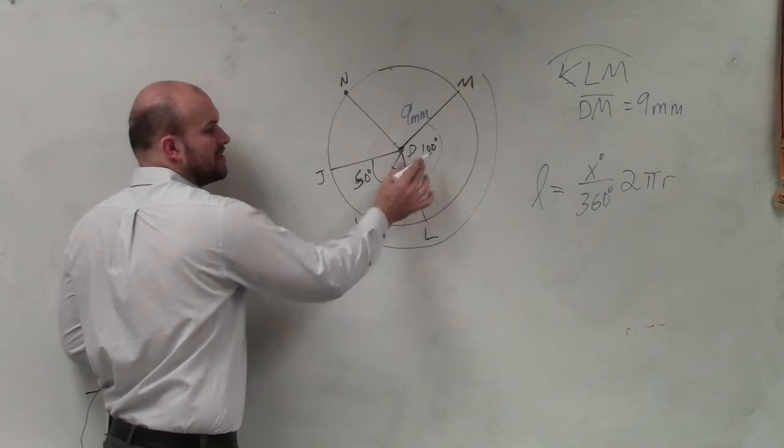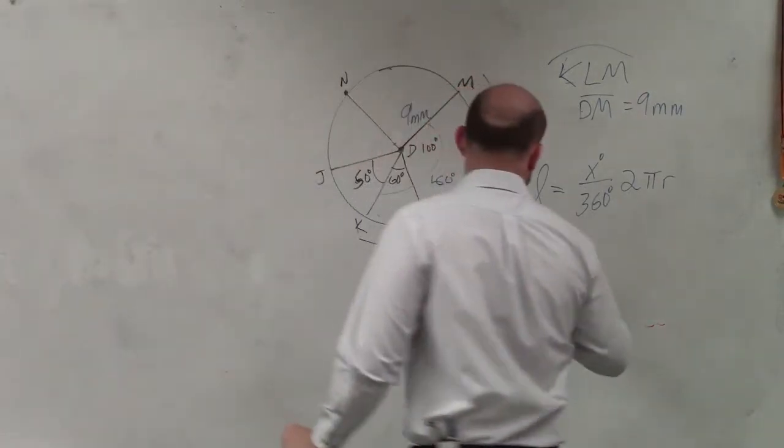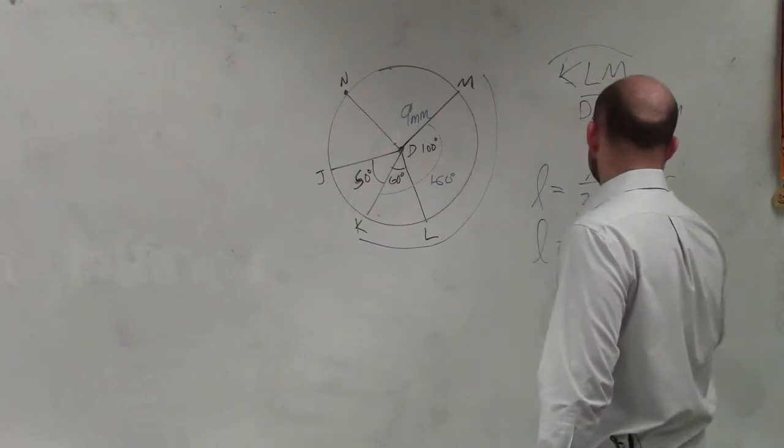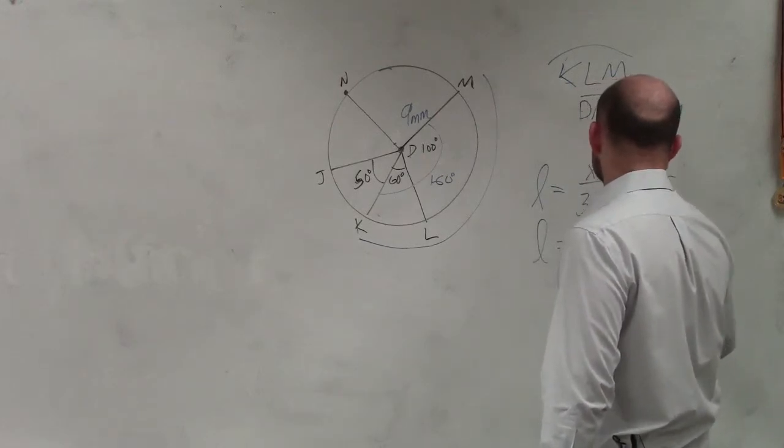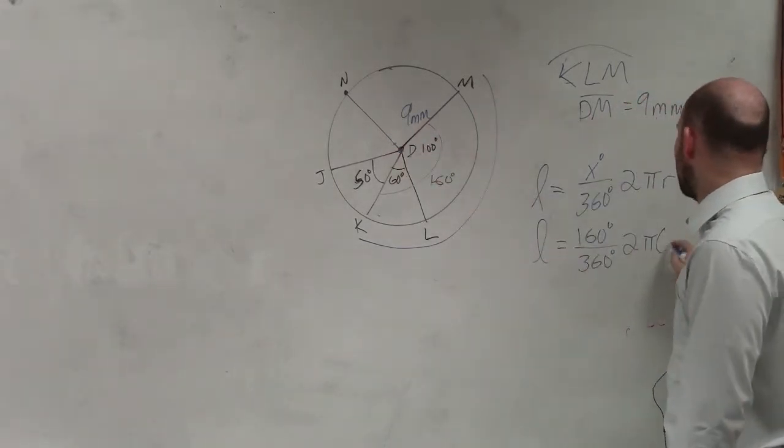If part of the central angle is 100 and the other part 60, we know that's going to be 160. So length equals 160 degrees over 360 degrees times 2 times pi times our radius, which is 9.